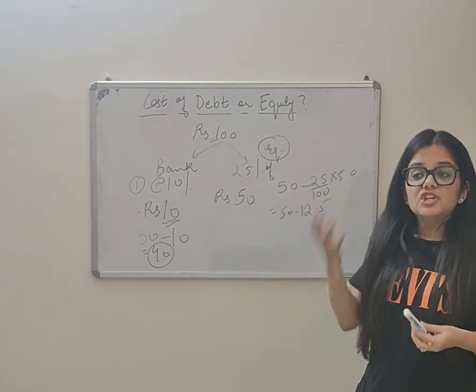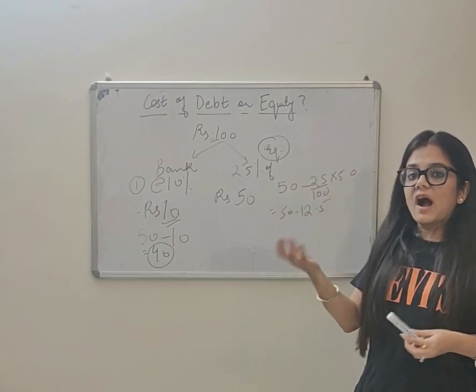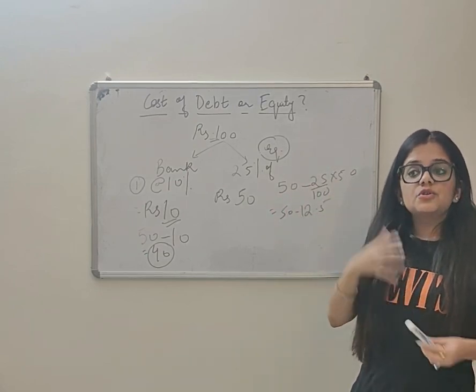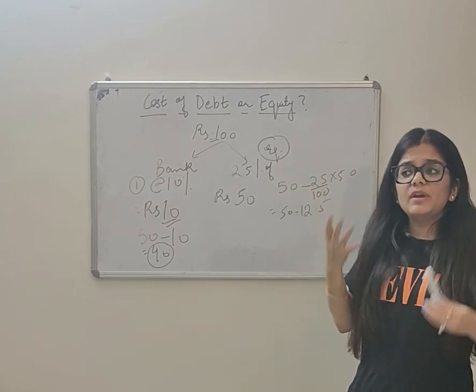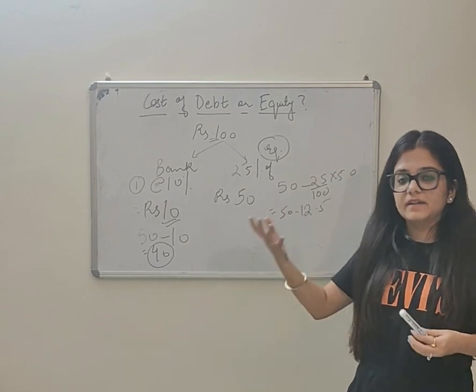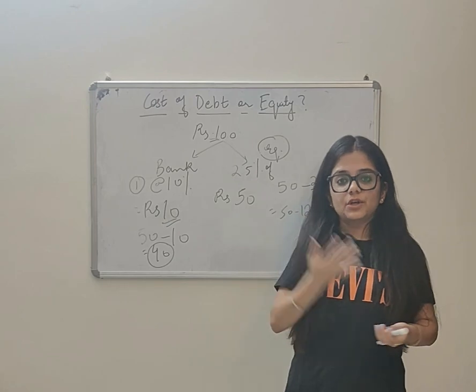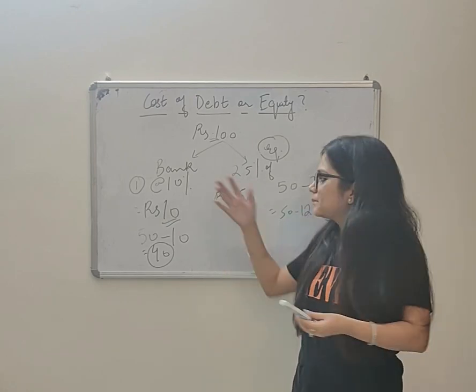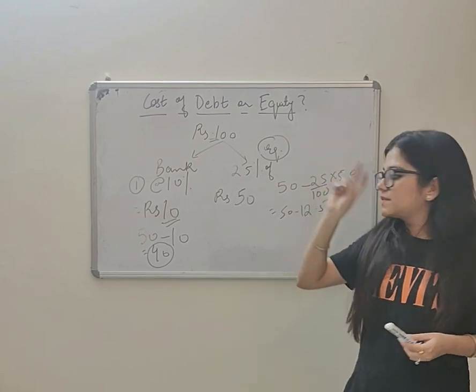In the equity case, this person is an equity shareholder. Shareholders take huge risk because they are paid at the end. Obviously this shareholder will demand high return - they will expect higher dividend after every year. That is why raising funds through equity is more expensive than taking a loan. This is the first point.